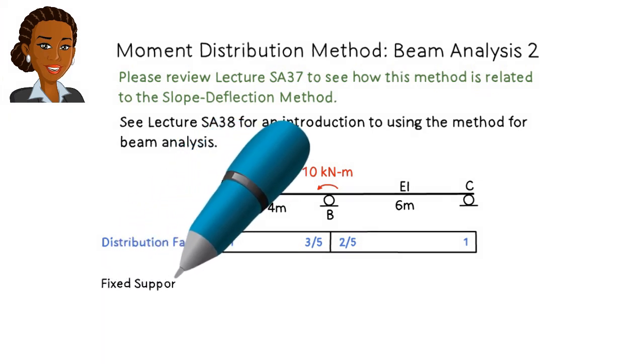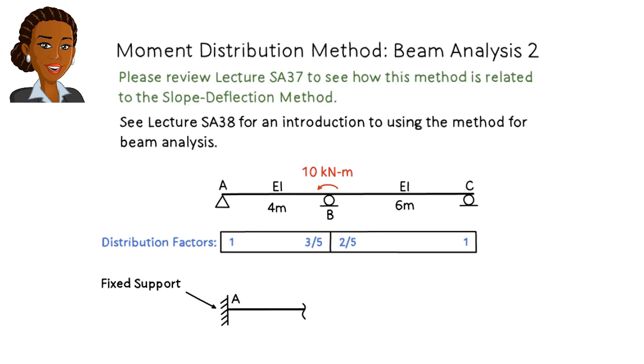But what if there is a fixed support at A? Would the distribution factor still be 1, since there is only one member connected to the joint? Common sense suggests that different support types should lead to different distribution factors. To investigate this, and to better understand how the two factors differ, let's adopt the approach we used for determining the distribution factors for joint B.